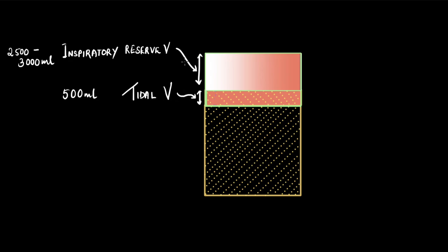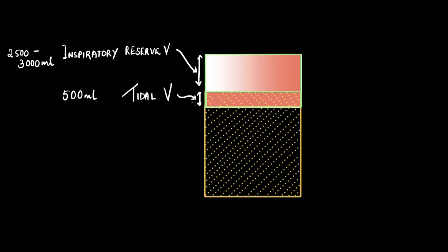After this forceful inspiration, the total volume of air that goes out when Ravi exhales will be inspiratory reserve volume plus tidal volume, because the same amount of air that gets into the lungs goes out during exhalation. Now let's say Ravi returns to his normal breathing rate — inhaling and exhaling just the tidal volume.